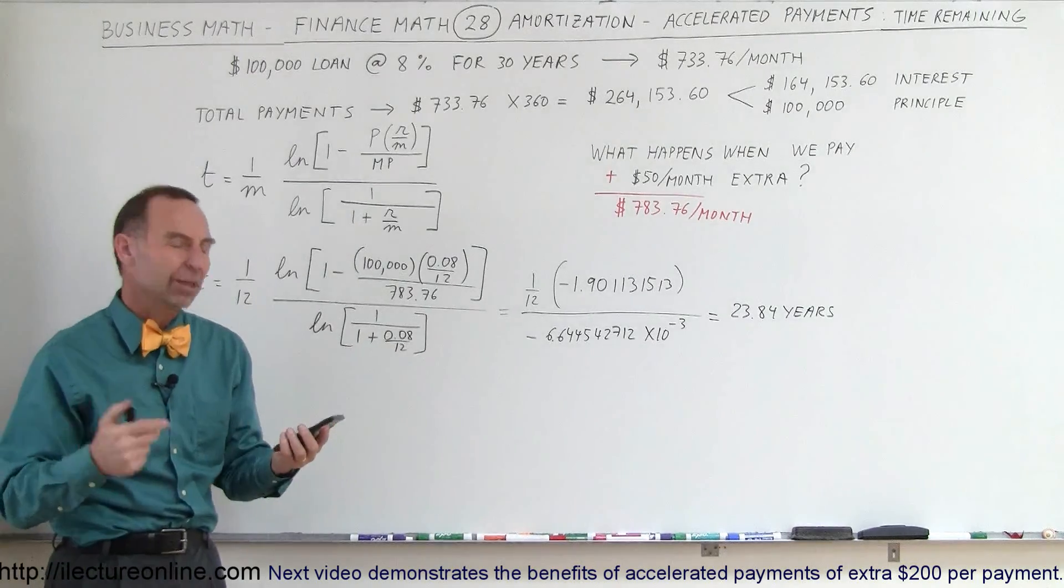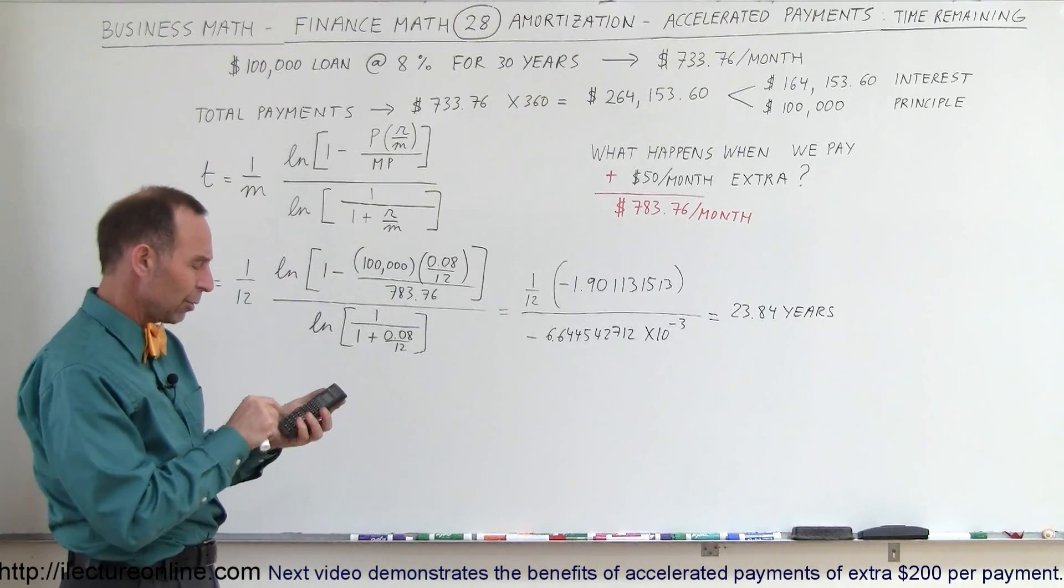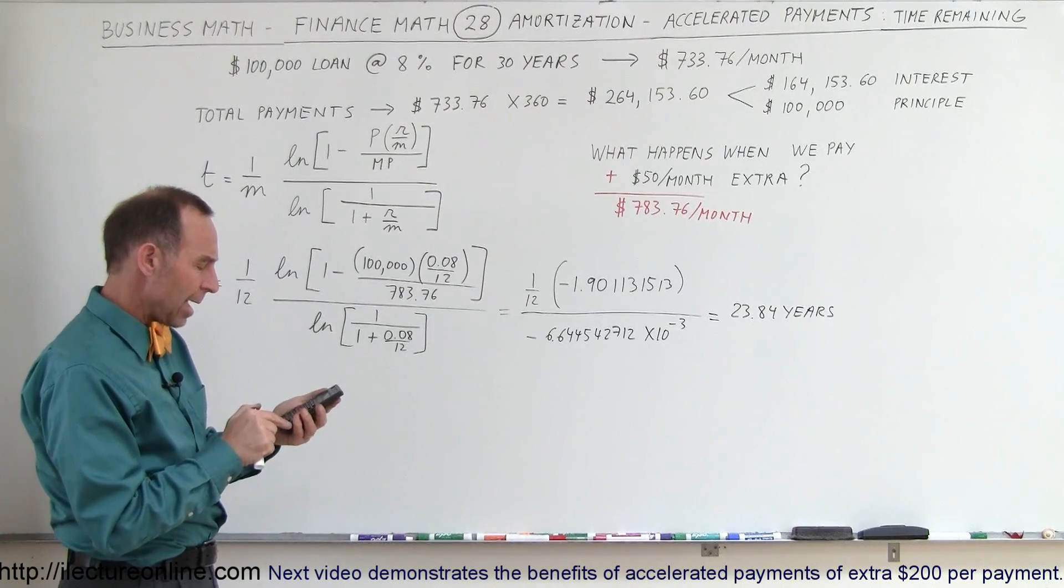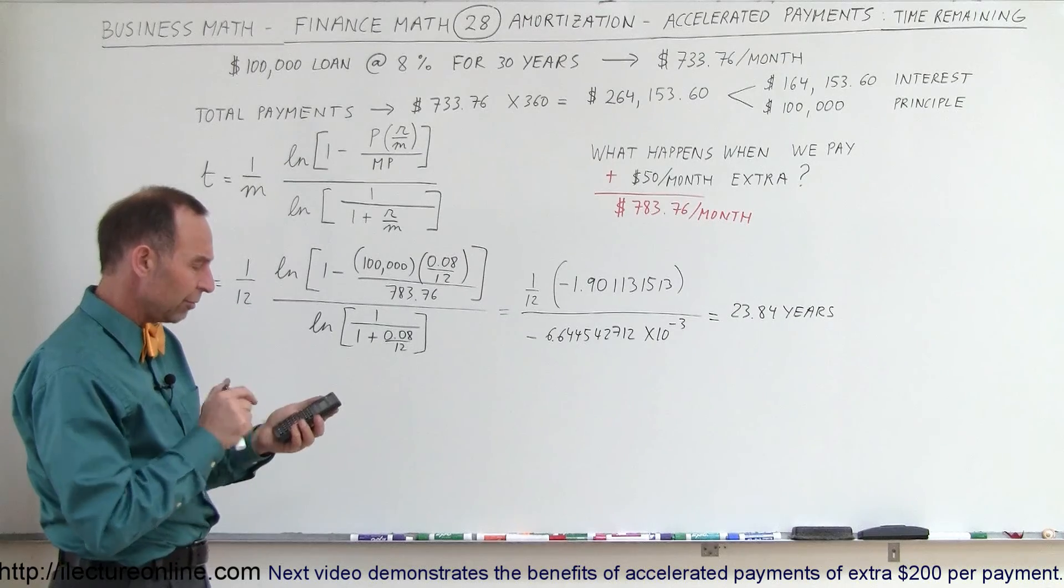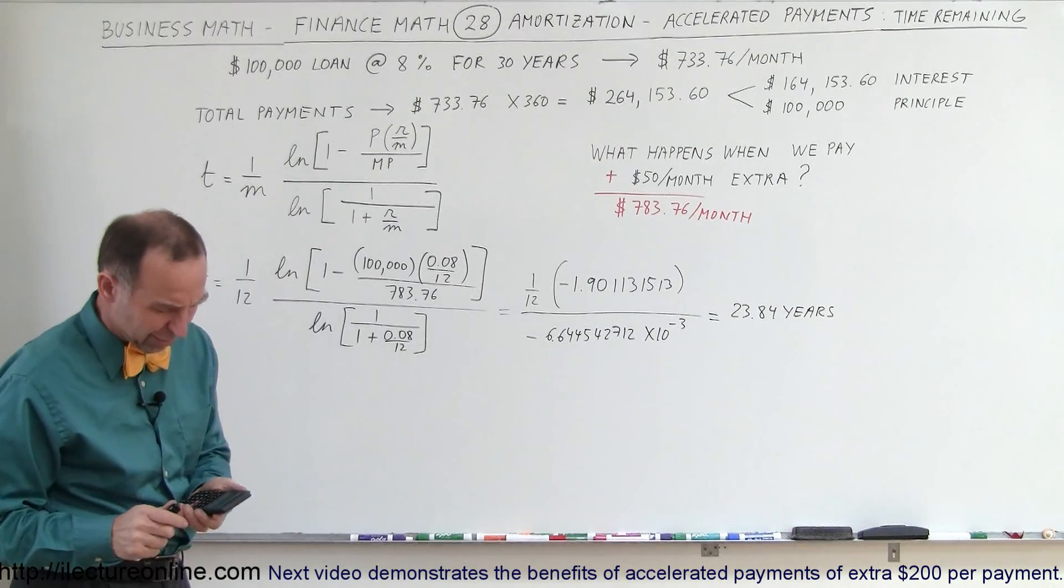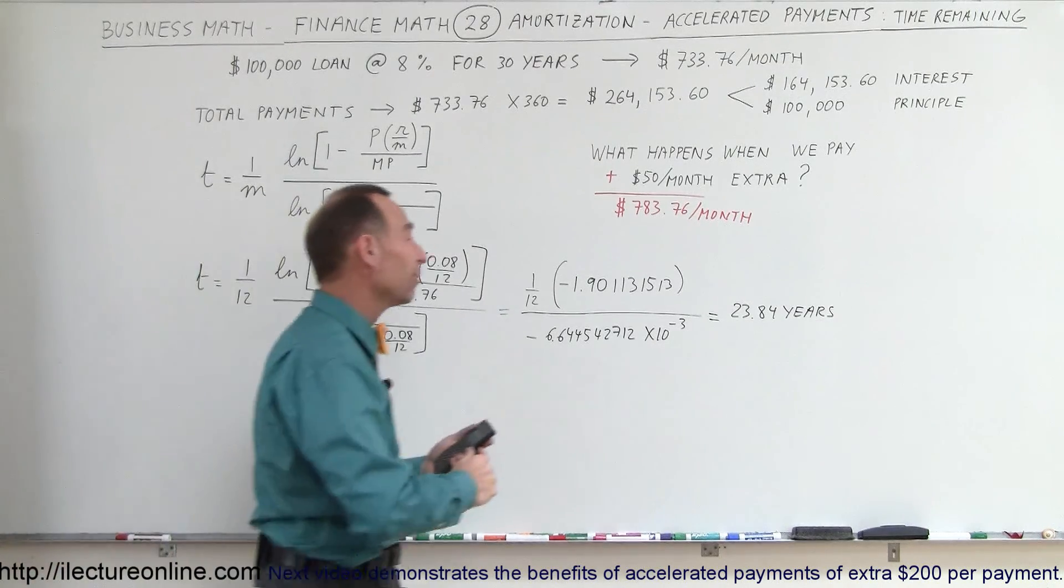Now, 0.84, how many monthly payments is that? So we take 0.84, and we multiply it times 12, and that is 10.08 monthly payments. So basically, that is equal to 23 years plus,